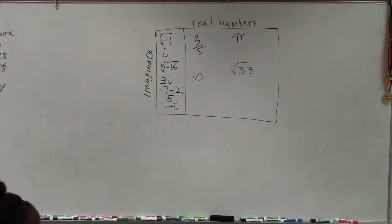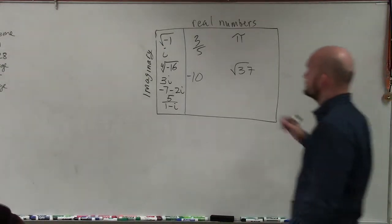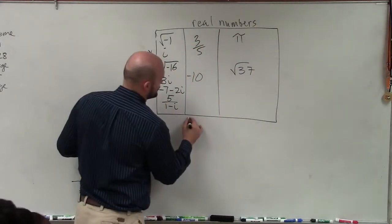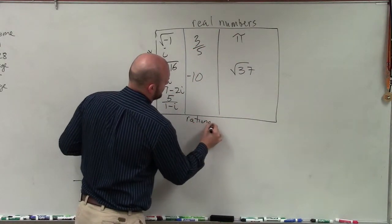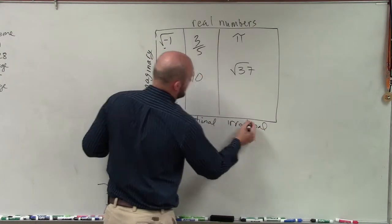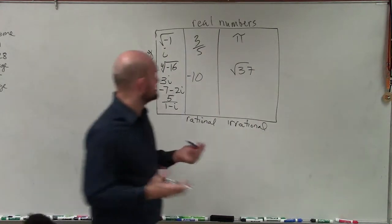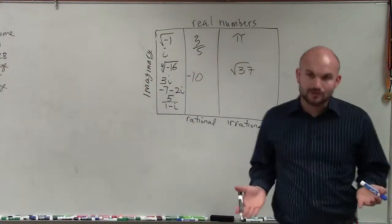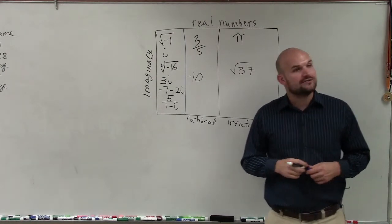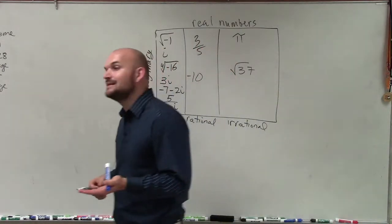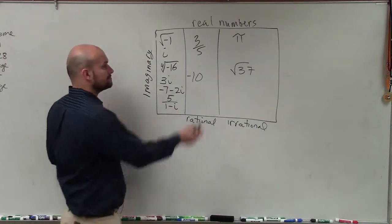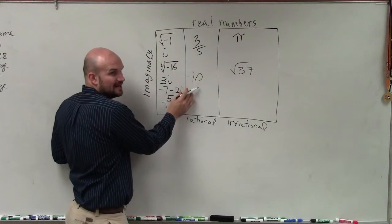We're going to classify real numbers. The focus right now is just breaking them down into rational and irrational. The basic idea is that rational numbers are numbers we can represent as a fraction — and not just a fraction over 1. Irrational numbers we cannot represent as a fraction. So can I represent negative 10 as a fraction?